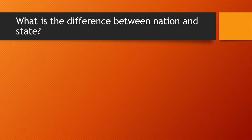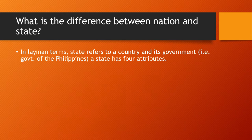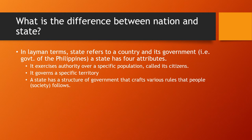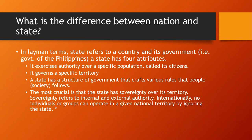At other times, they saw themselves as members of larger political categories like Christendom or the entire Christian world. So, what is the difference between a nation and a state? In layman's terms, a state refers to a country and its government. For example, the Philippine government is a state that has four attributes: it exercises authority over a specific population called its citizens, governs a specific territory, has a structure of government that crafts rules, and crucially, the state has sovereignty over its territory.